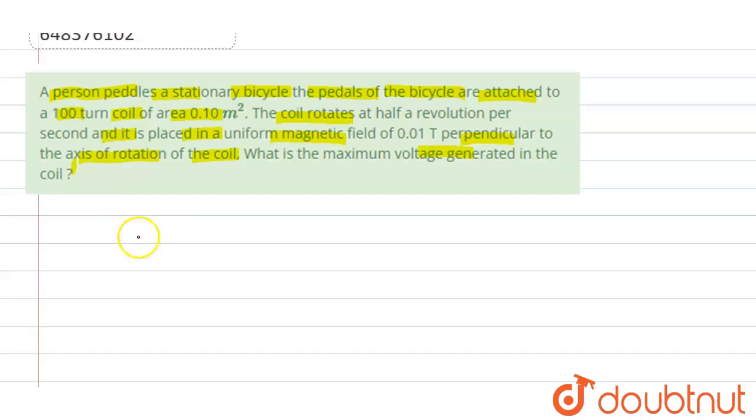It is given that a coil whose turns are N equals to 100 turns and its area is also given, area is 0.10 meter square. Now it is attached to a bicycle.